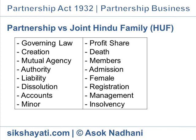Only the Karta has the implied authority to manage the family property; other coparceners cannot do so. Liability: The liability of every partner of the firm is unlimited. Every partner is personally liable for discharging partnership liabilities out of the partnership property along with his private property.